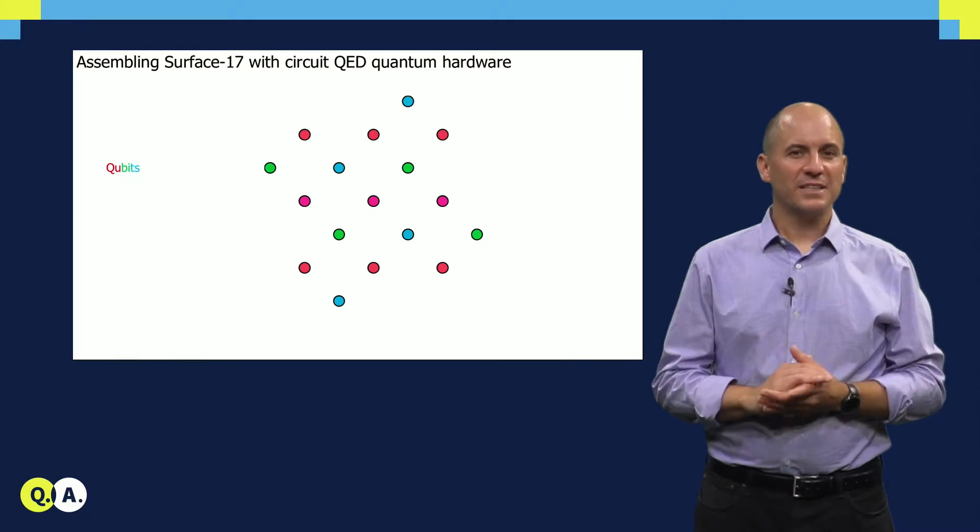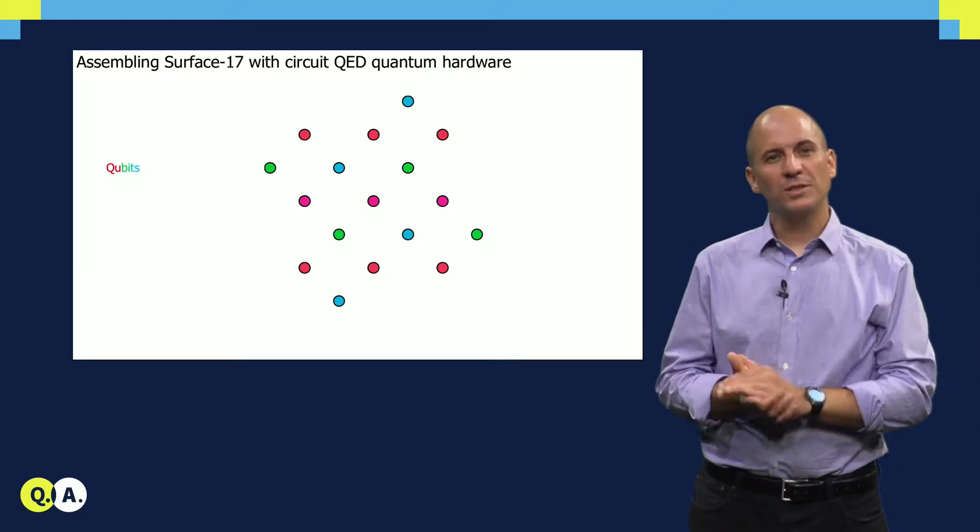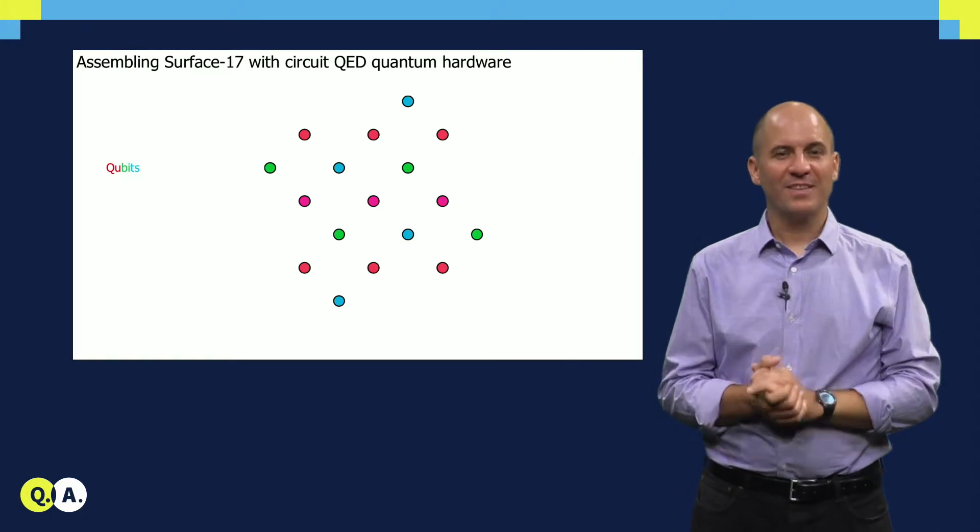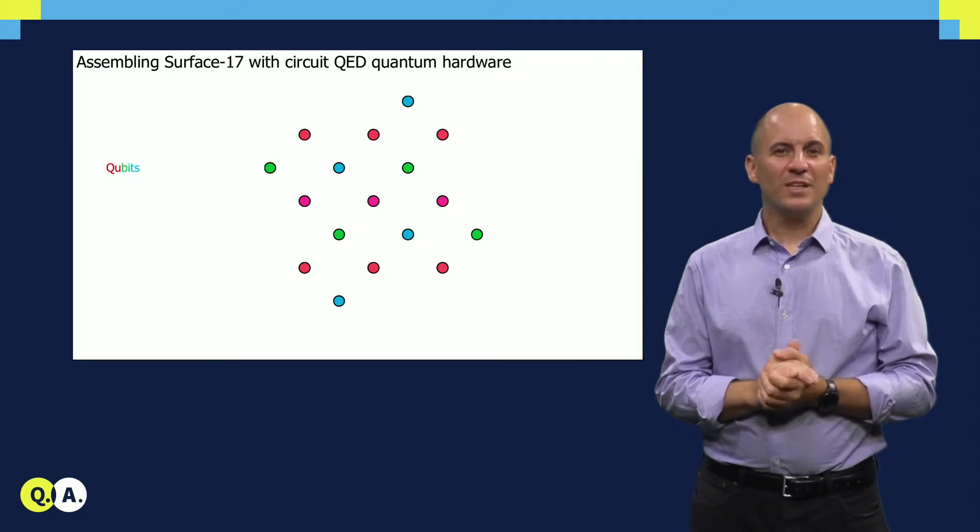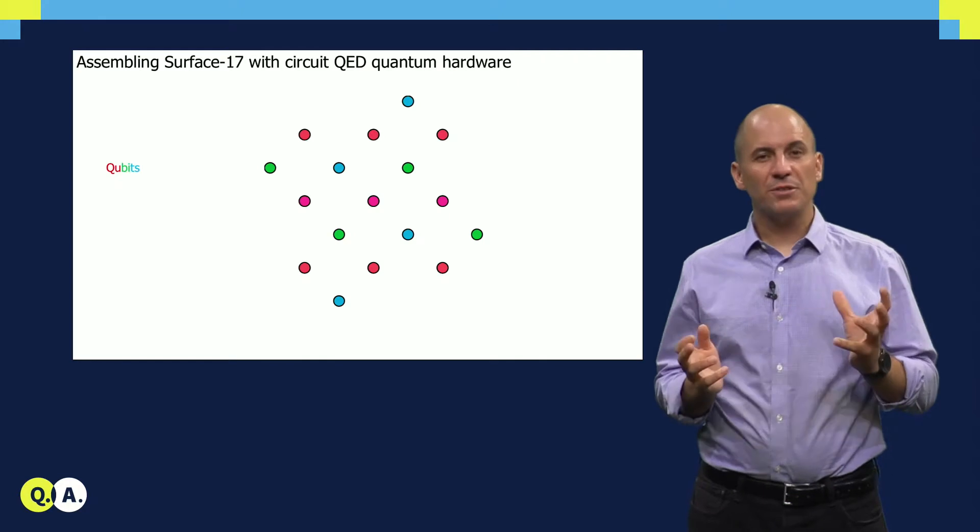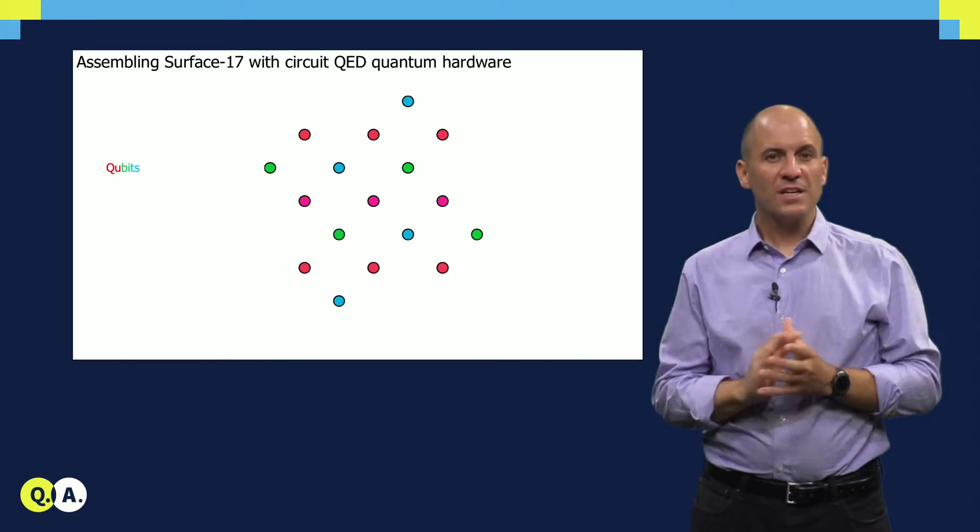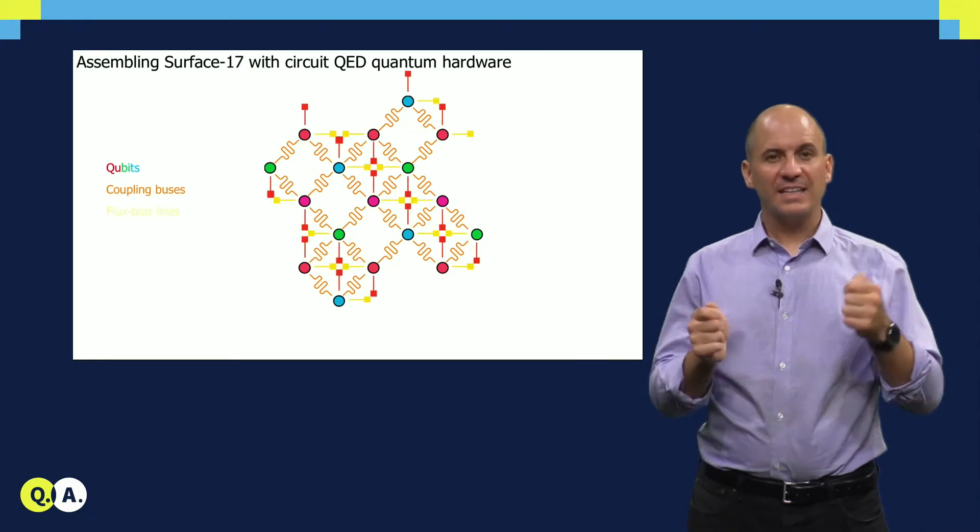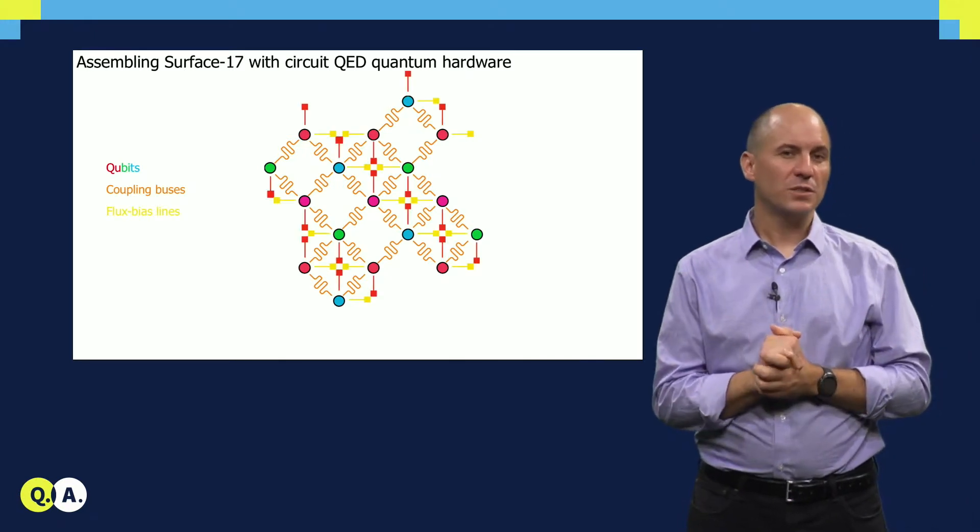First, we lay out the square lattice of qubits. Let me symbolize the qubits by circles. Please disregard their assigned color for now. To perform two-qubit conditional phase gates between nearest neighbors, as presented by Adrian, we add, first, a coupling bus resonator to interconnect them, and second, a dedicated flux bias control line to each qubit.